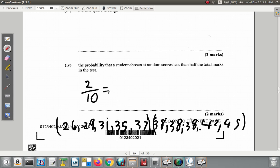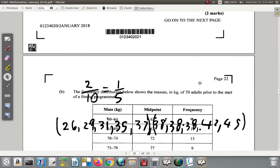So it's 2 out of 10, which is the same as 1 out of 5, 1 fifth. The probability is 1 in 5. It's 1 fifth.